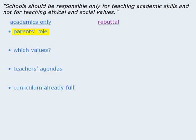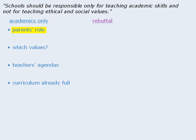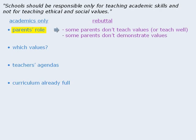Well, we might counter this by saying that some parents don't teach values, or they teach values poorly, in which case the school should teach them. Or, we might note that some parents don't demonstrate the values they teach, in which case the school should teach them. We might also add that even if values were taught in school, the parents can and should be involved in the process. Typically, we need only address one or two points for the other side to show that we have thoughtfully considered both sides of the issue.